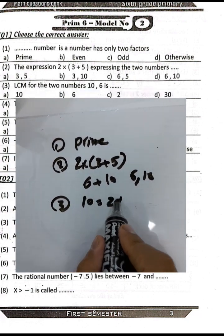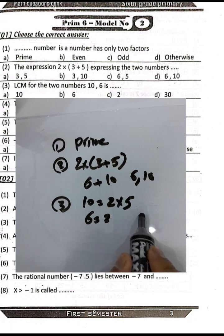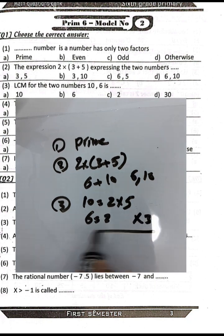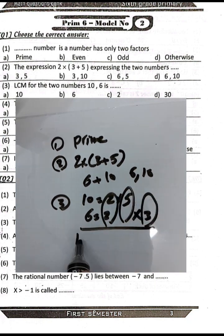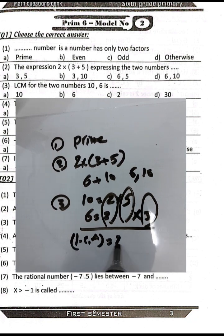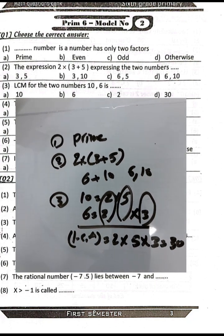Ten equals two times five and six equals two times three. To find the LCM between them, it will be two times five times three. Two times five equals ten, ten times three equals thirty. The result will be thirty.